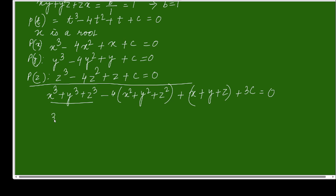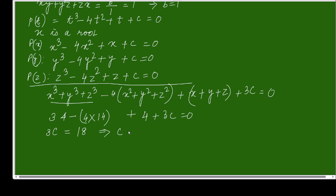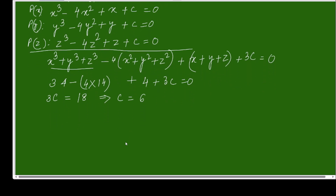Substituting the given values: 34 − 4(14) + 4 + 3c = 0, which is 34 − 56 + 4 + 3c = 0, so 3c = 18 and c = 6. Writing the equation again: p(t) = t³ − 4t² + t + 6 = 0.